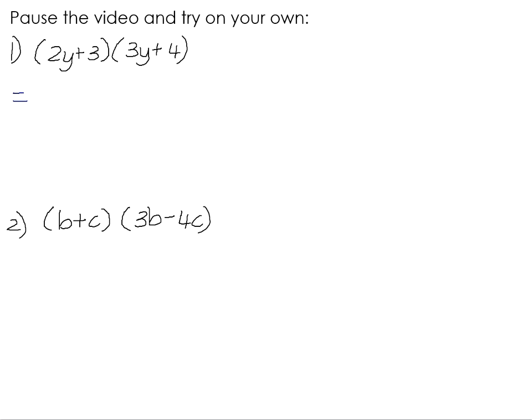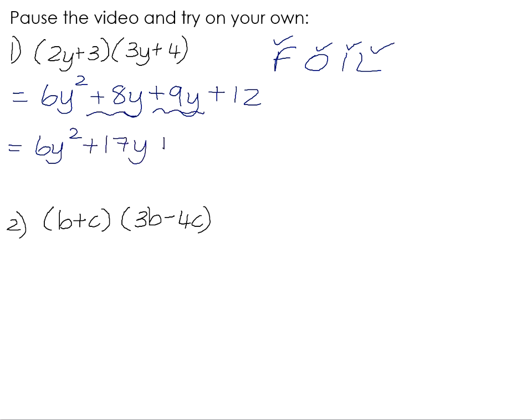Number 1. The firsts are 2y times 3y. So 2 times 3 is 6, and y times y is y squared. The outers are 2y and positive 4. 2y multiplied by positive 4 is positive 8y. The inners, positive 3 times 3y is positive 9y. And the last is positive 3 times positive 4, which is positive 12. We have like terms, positive 8y and positive 9y. So 6y squared, 8 plus 9 is 17y plus 12.